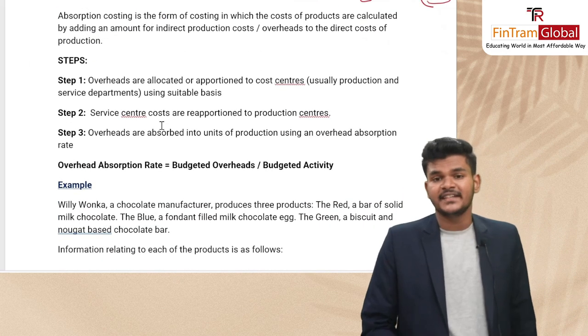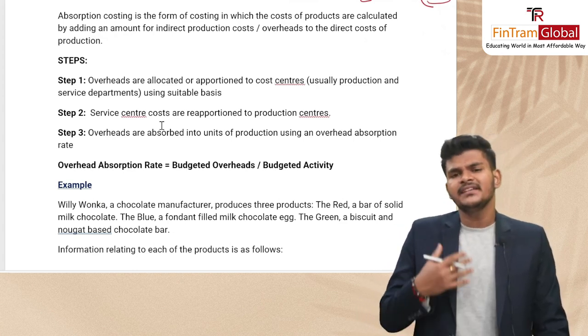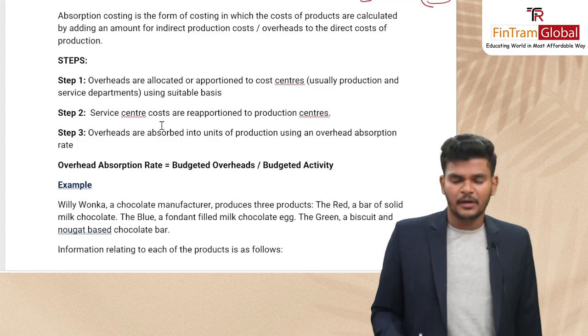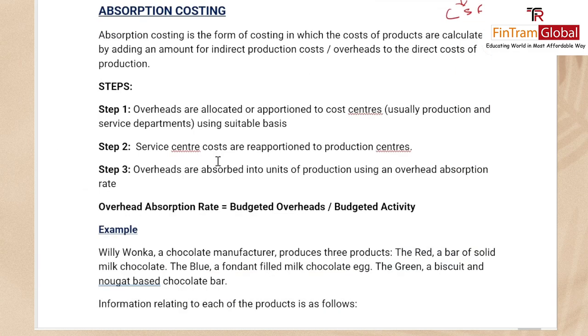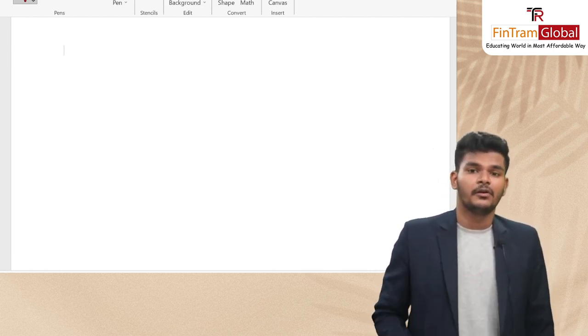Now, moving on to some costing techniques. We've learned what costing is and where we use it, but how exactly is that process conducted — how do we determine the cost of a particular product? Let's first learn about the traditional method of costing known as absorption costing. Before jumping in, I'd like to explain a few concepts. If you're familiar with accounting principles, you'd know the structure of a P&L account — the statement of profit or loss.